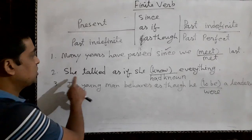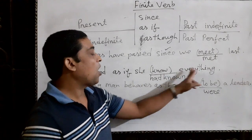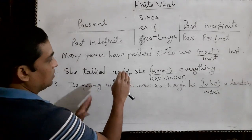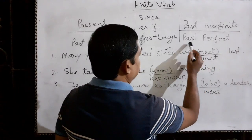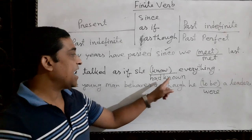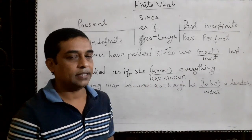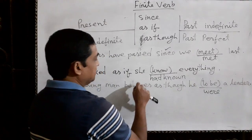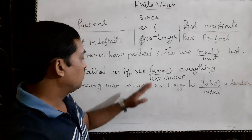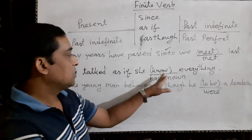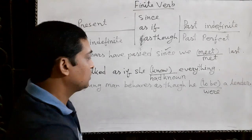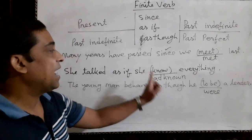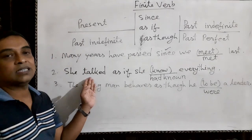Example number two: 'She talked as if she knew everything.' The first clause is in past indefinite tense. So the last clause will be in past perfect tense. The correct answer will be 'she had known everything.' This clause has become past perfect tense: 'she had known everything.' In past perfect tense, we must write the auxiliary verb 'had' and then transform the main verb into past participle form. So we have written 'had' as an auxiliary verb and 'known,' which is the past participle form of 'know.' The correct answer is 'had known' because the first clause is in past indefinite tense.